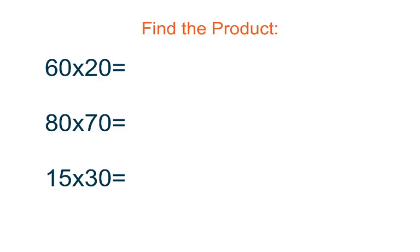If we're solving 60 times 20, the first thing we're going to do is cross out those zeros and place them down in our product. 6 times 2 is 12, so our product is 1,200.